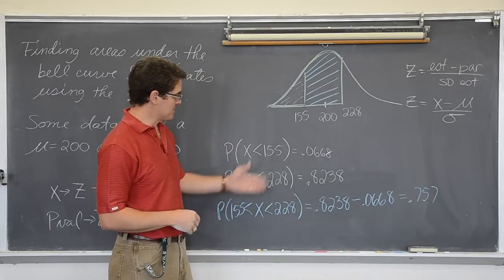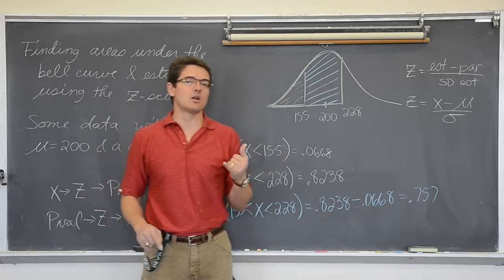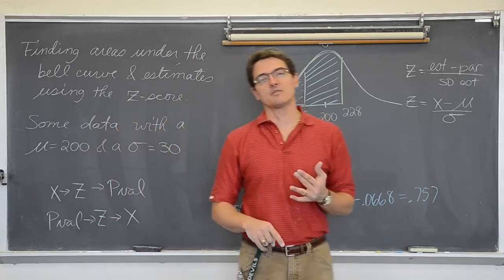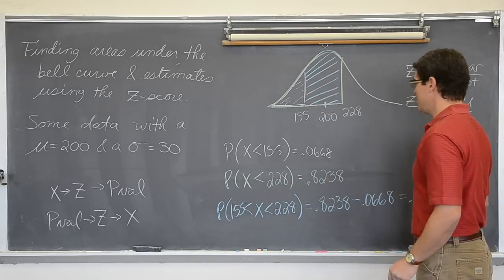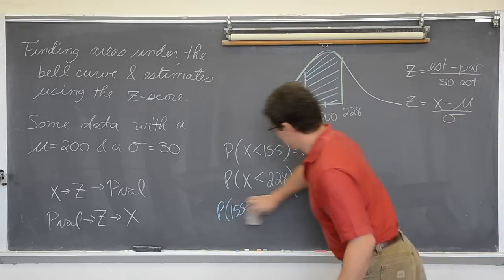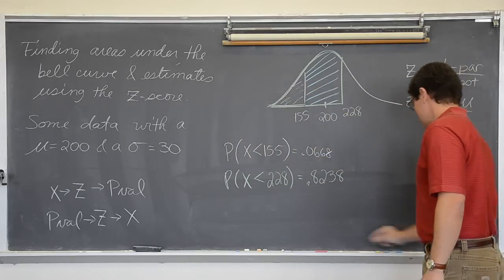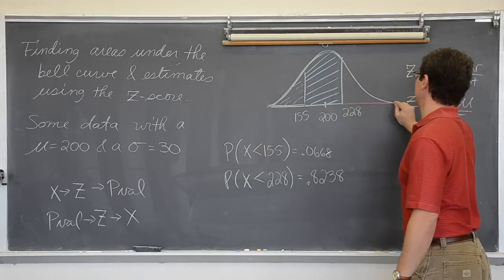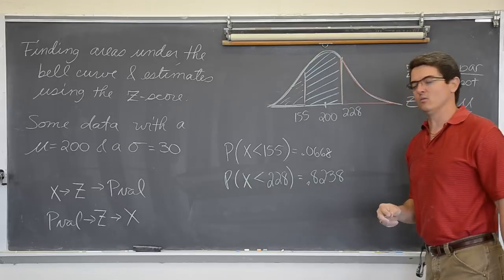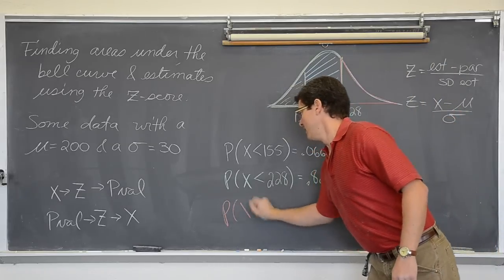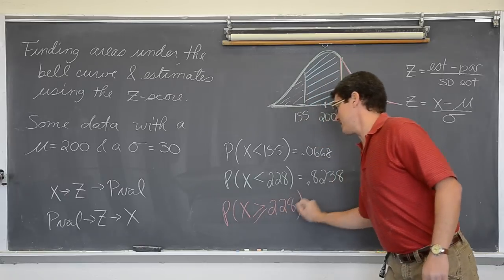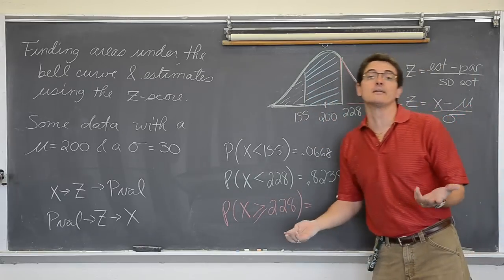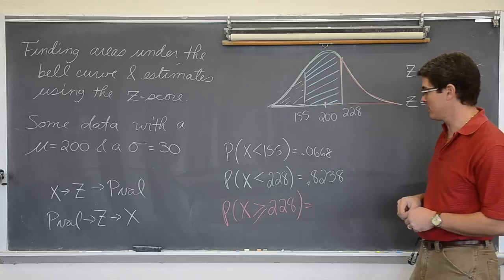A couple of z scores and how to find the area of an interval. Area to the left of the large minus the area to the left of the small. Now, what if I want this area? What if I want the area to the right of 228? What if I want the probability of x being greater than 228? Or, let's just throw an equal sign in there for good measure because it is not going to do anything anyway. You just have to match the wording of your question.